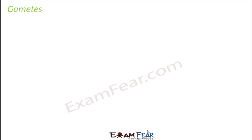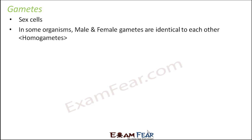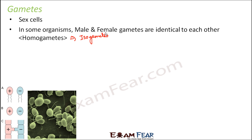Now, these specialized sex cells are called gametes. In some organisms, the male and female gametes are exactly identical to each other — such gametes are known as isogametes or homogametes. Iso means same. When male and female gametes are exactly identical, you cannot even distinguish between male and female; any of them can be either. Examples of organisms with isogametes are Chlamydomonas and Spirogyra.